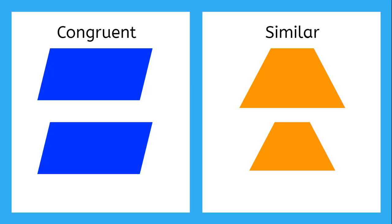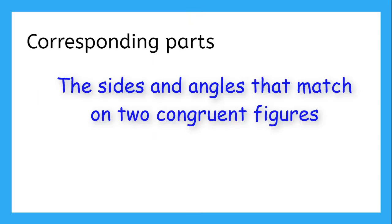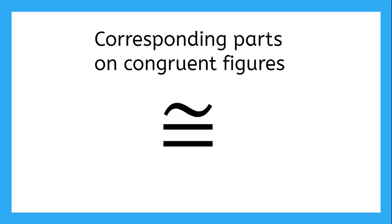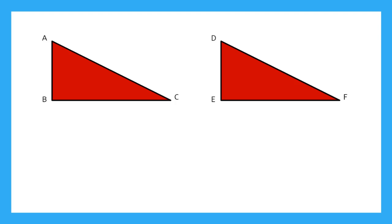Now that we know the difference between congruent and similar figures, we can talk about the corresponding parts. Corresponding parts refer to the sides and angles that match on two congruent figures. We use this symbol — an equal sign with a squiggle on top — to represent corresponding and congruent sides and angles. Now let's name the corresponding parts on these two congruent triangles. I see that line segment AB is the same as line segment DE. So I can write that as line segment AB — remember, I put my line segment notation on top — is corresponding and congruent to line segment DE.